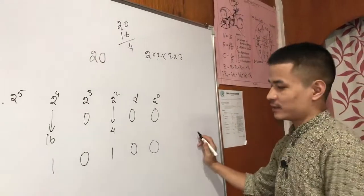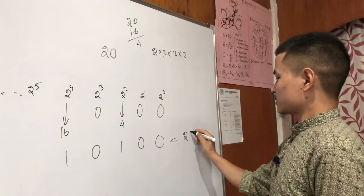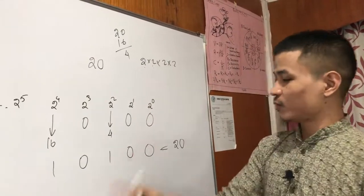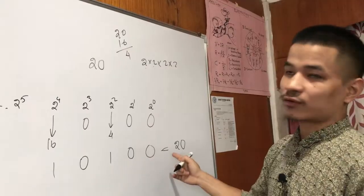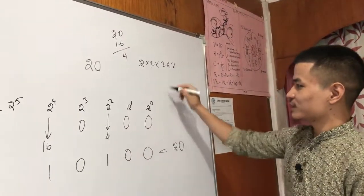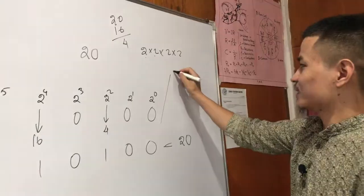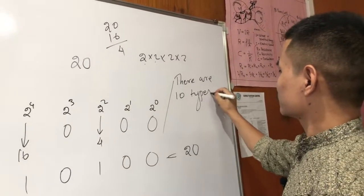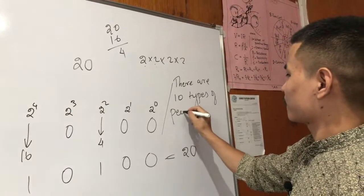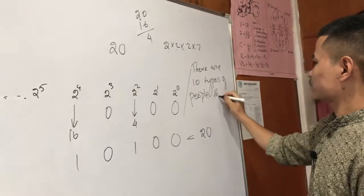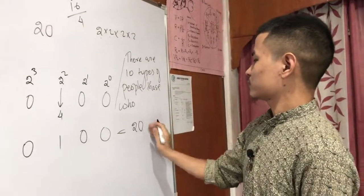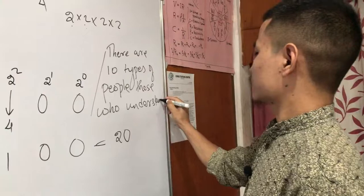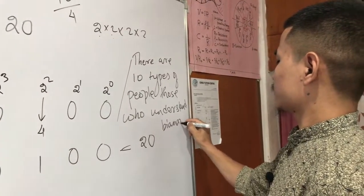Here is the decimal number: here is 20. So here is binary: here is 1, 0, 0.